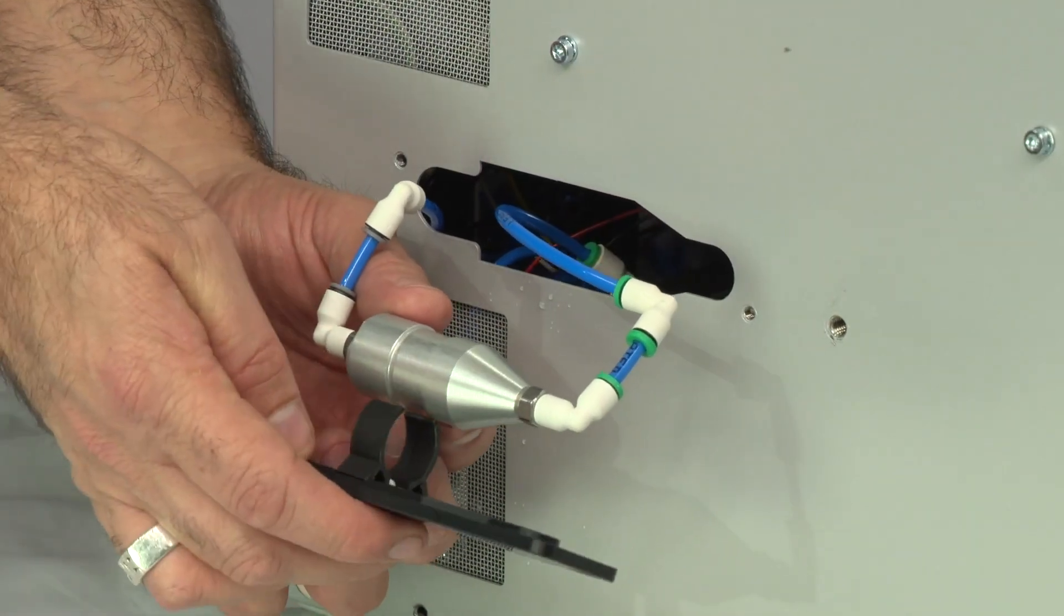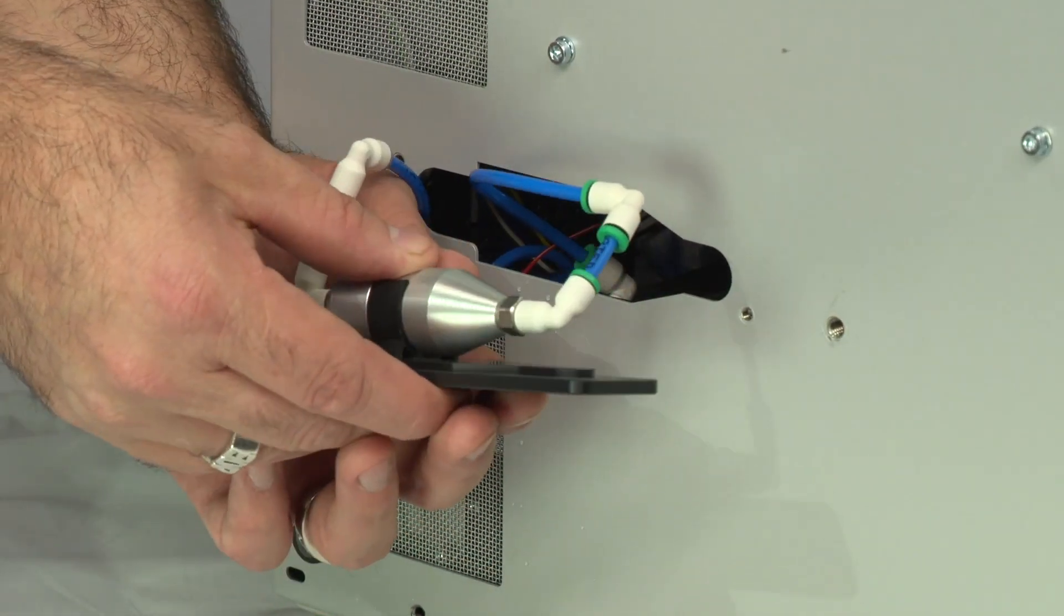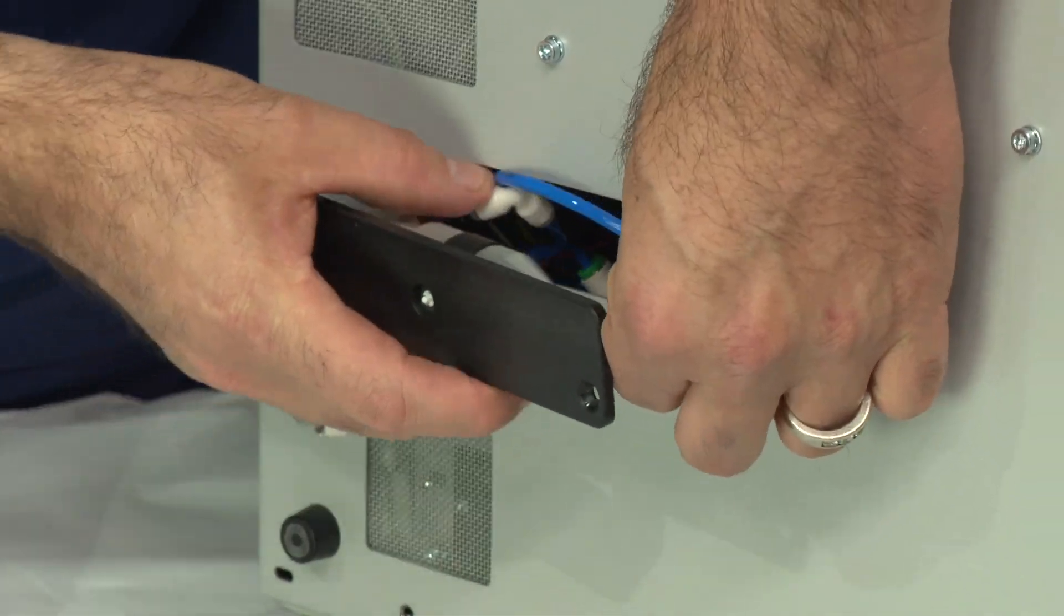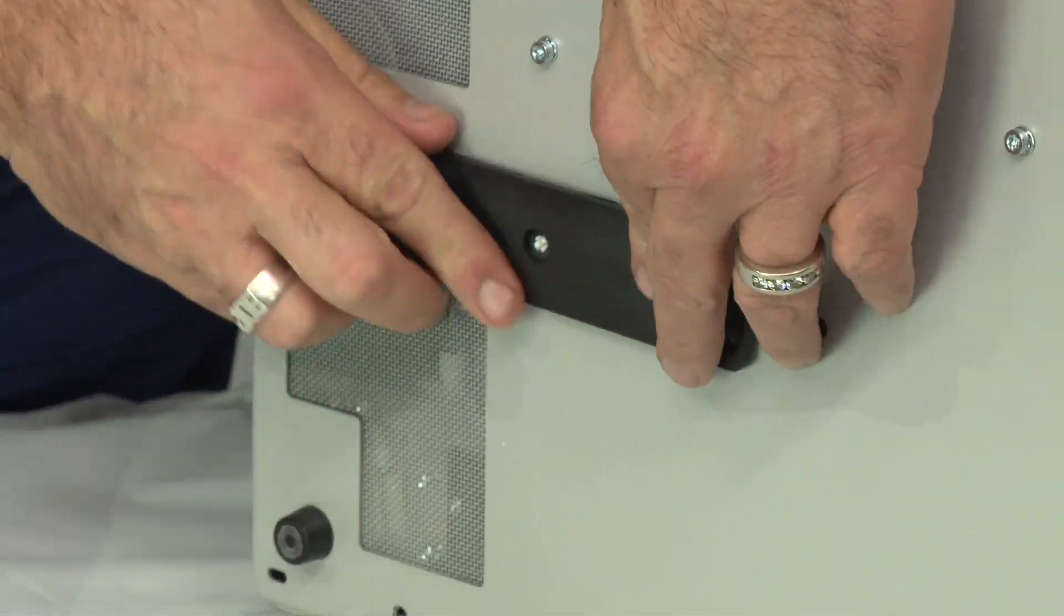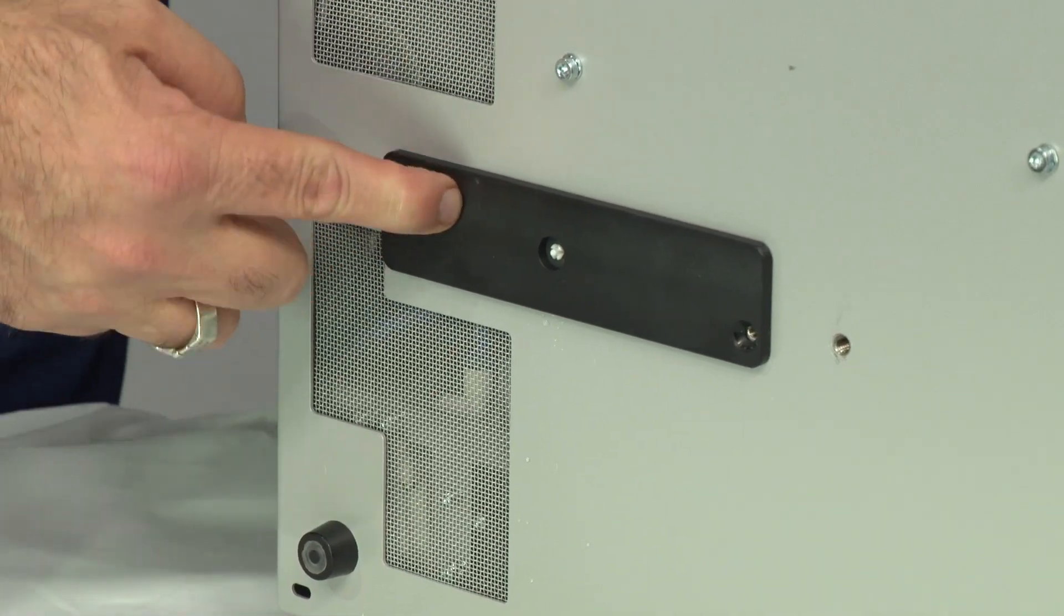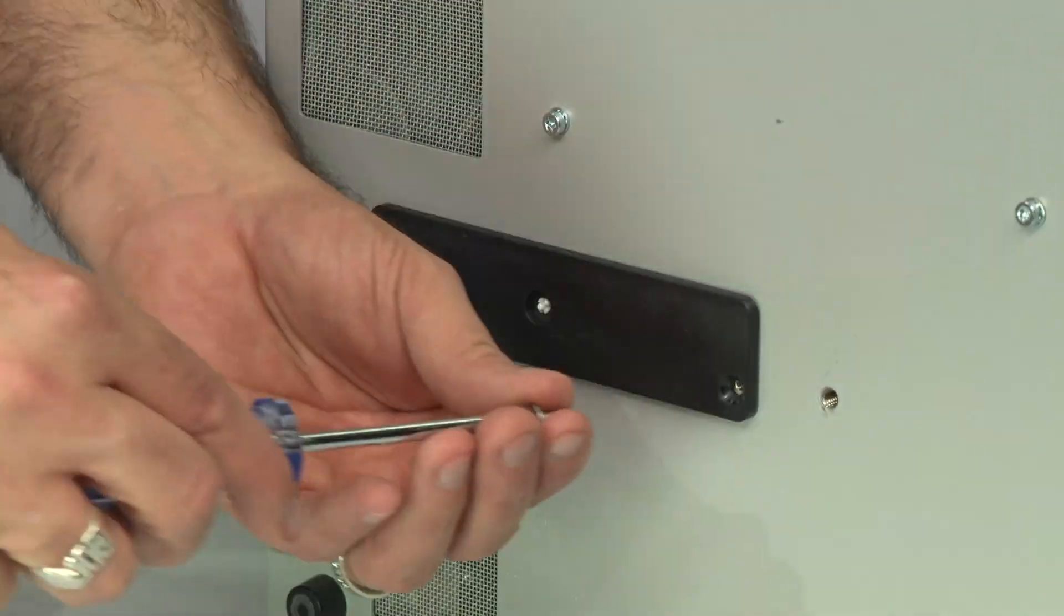Attach the cover to the new filter and place in the chamber. Screw and tighten the water filter cover using a Torx tool size 20.